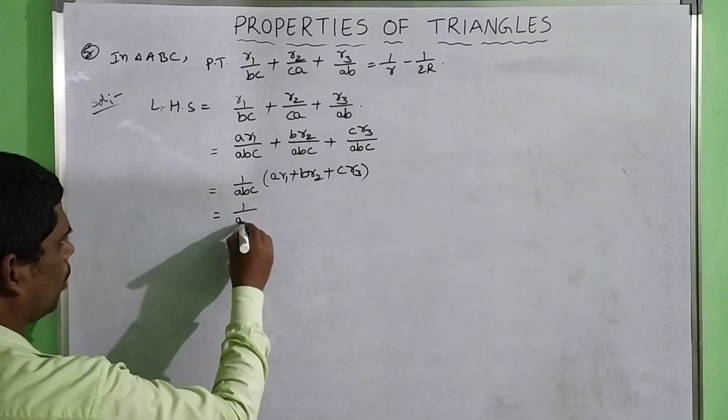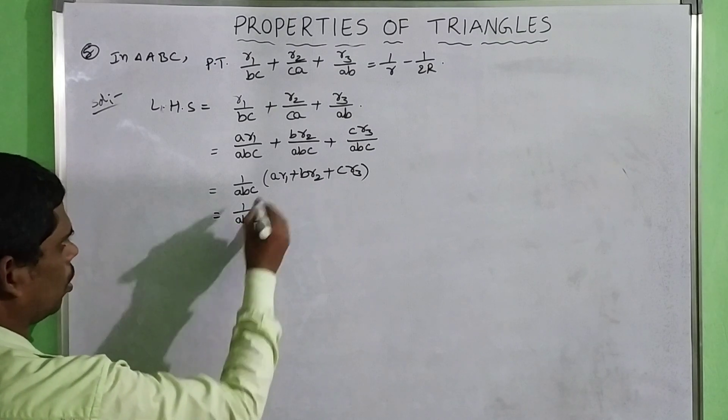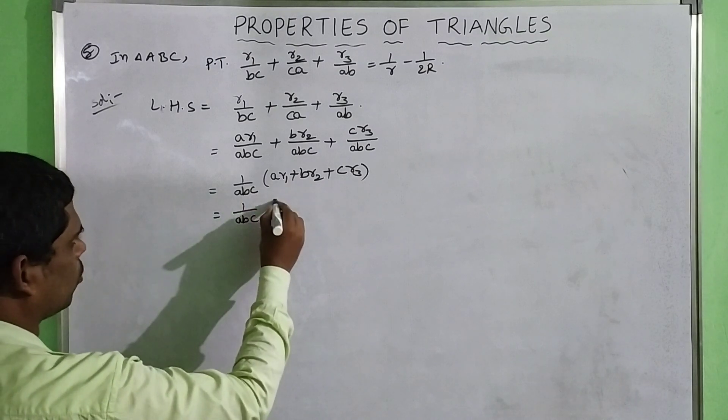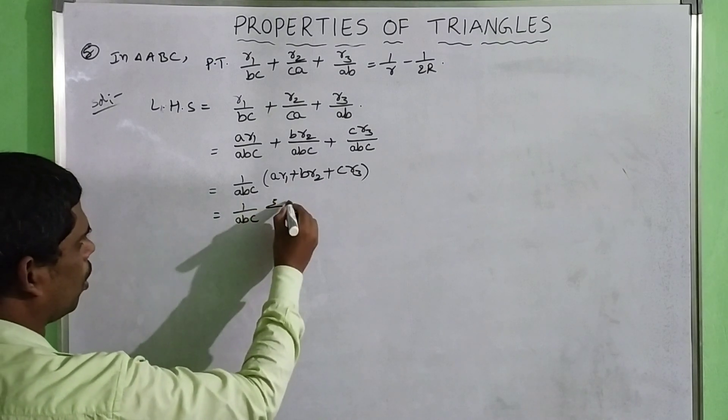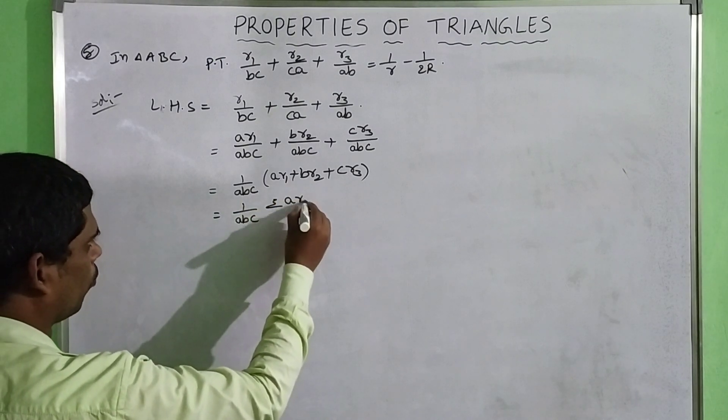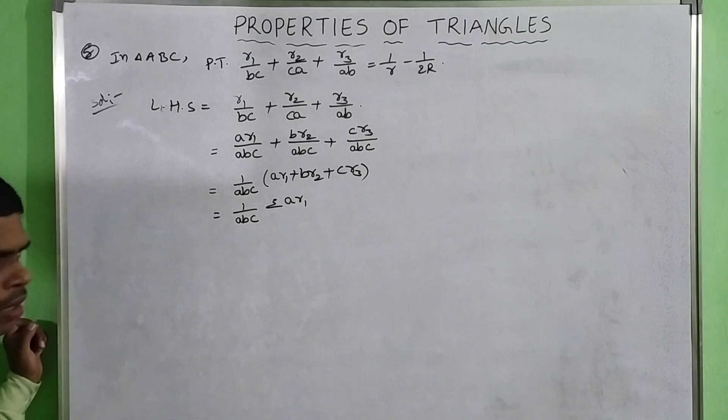This can be written in simplest form as (1/ABC) × Sigma(A·R1).